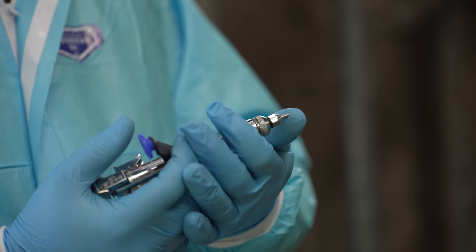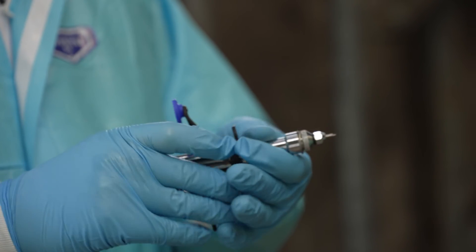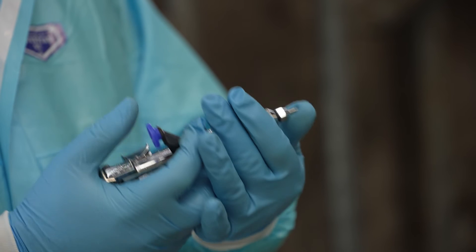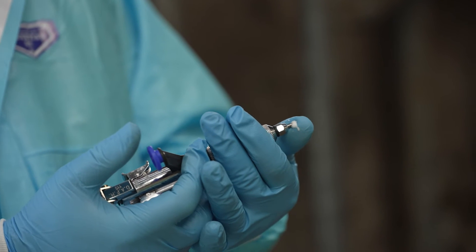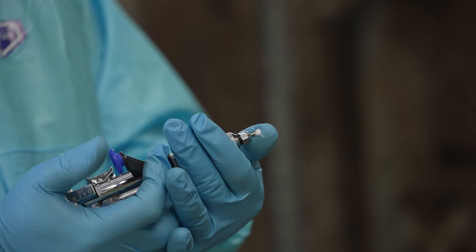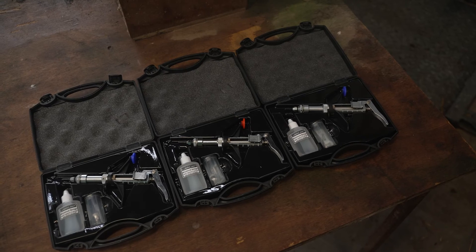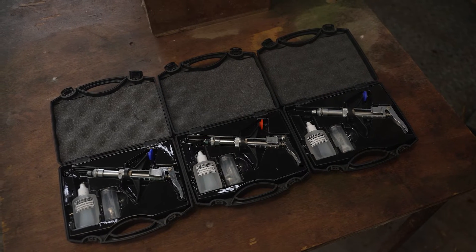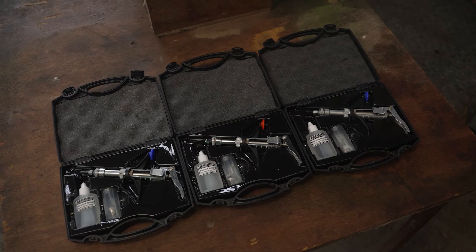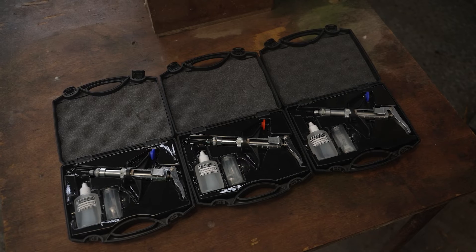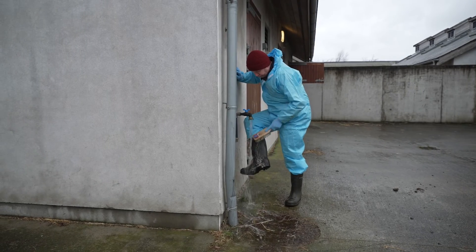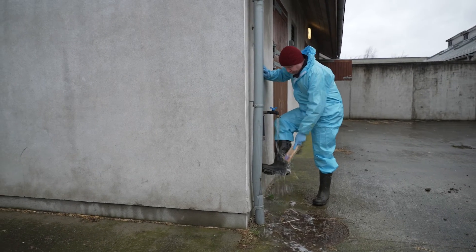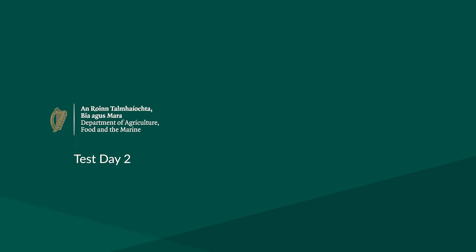Syringes should be emptied at the end of the test before leaving the farm, to prevent crystallization of the tuberculin in the barrel which could lead to malfunction and inaccuracy of the tuberculin injection. Syringes should be stored empty with the settings in the full position. A thorough cleansing and disinfection of all equipment, boots, and protective clothing should be carried out prior to departure from the farm.